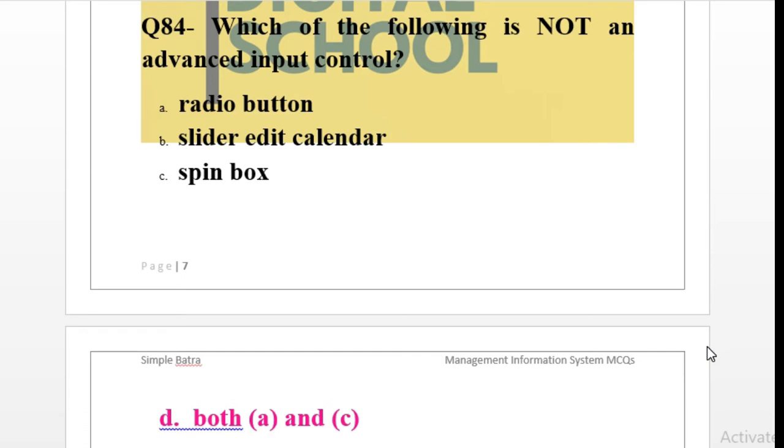Question 84: Which of the following is not an advanced input control? Radio button, slider edit calendar, spin box, both a and c. Among all options, which options are not used for input control? Here radio button and spin box, both are not used as the advanced input control while taking inputs from the user through the forms or anywhere.